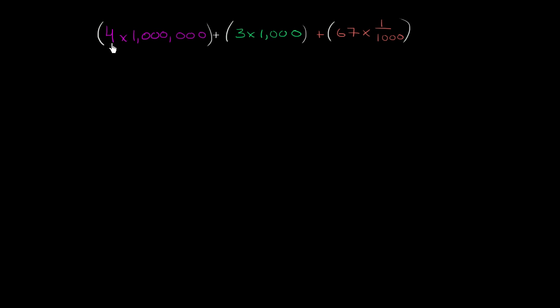So let's figure out what each of these expressions in the parentheses actually represent. What's 4 times 1 million? Well, that's 4 million. What's 3 times 1,000? Well, that's 3,000.